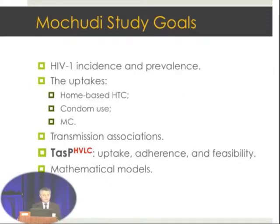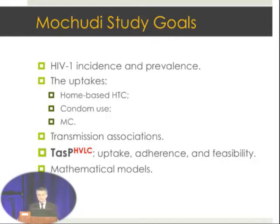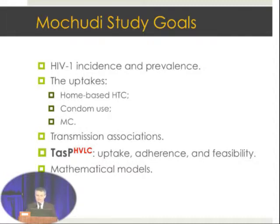Now let me step back and tell you about Machudi's study in Botswana. The study started in May 2010, and the main goals included assessment of HIV incidence and prevalence during annual household surveys, measuring uptake of home-based HIV testing and counseling, voluntary male circumcision, inferring transmission associations, and measuring uptake, adherence, and feasibility of treatment as prevention in a subset of individuals with high viral load. The threshold in this study was 50,000 copies. All this data was also used to generate mathematical models.